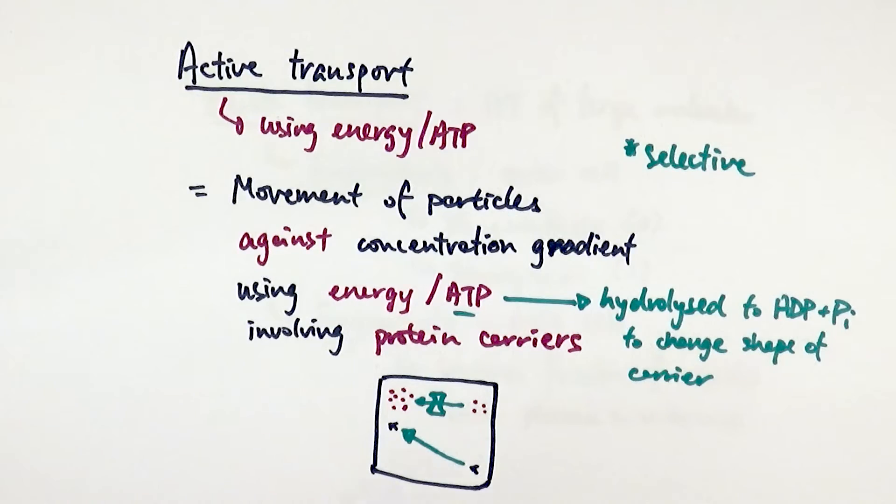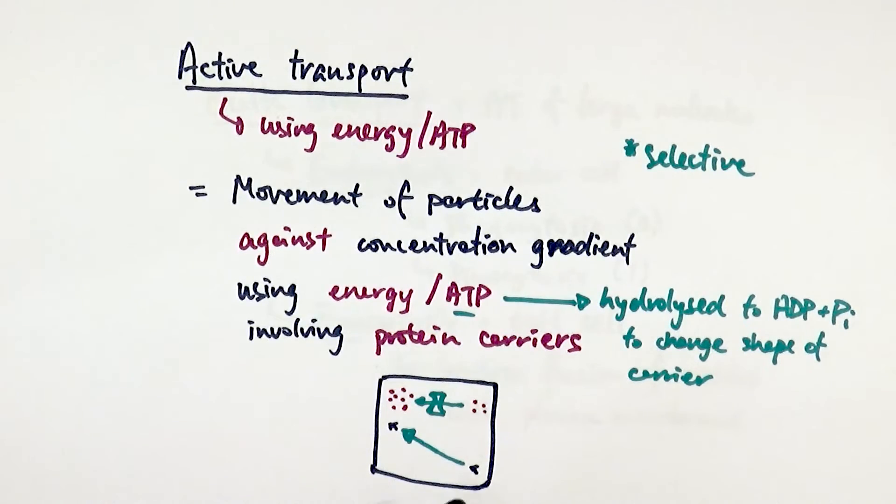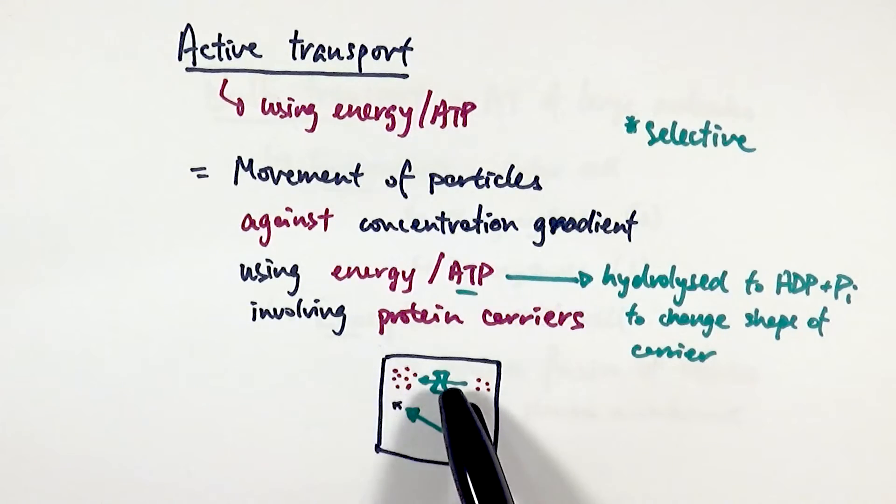So a quick summary. Active transport is one of the mechanisms of movement. It is the movement of particles against the concentration gradient using energy in the form of ATP involving protein carriers on the plasma membrane. So it's going from a low concentration area to a high concentration area using a carrier protein.